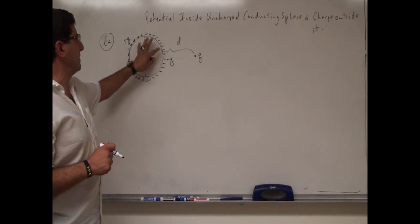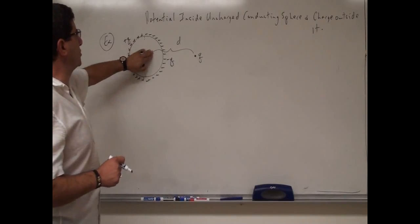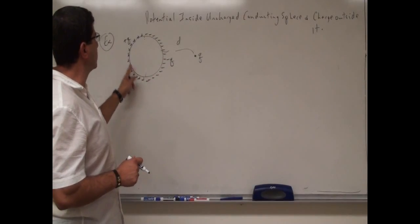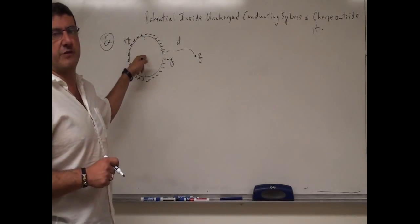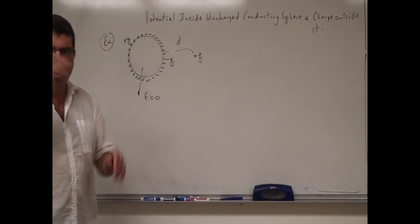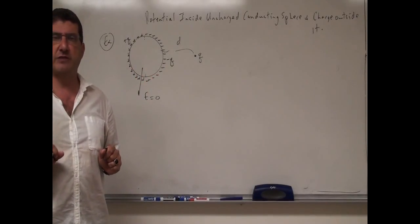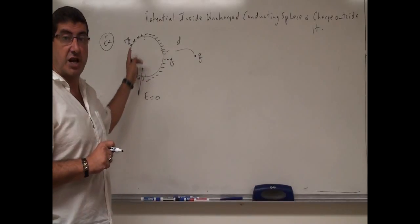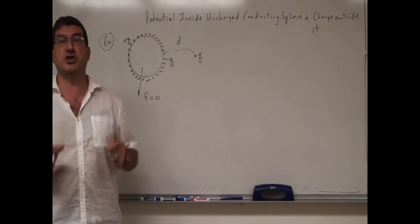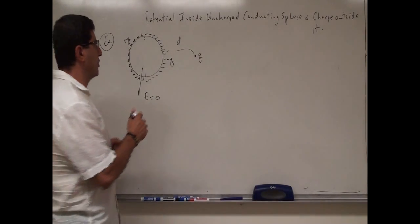So what's going to be the potential anywhere inside of the sphere? We're going to use similar arguments as before. Since this is a conductor, the electric field inside is zero — all the charge rushes to the outside, so anywhere inside the electric field must be zero. Therefore, the surface of the conductor must be an equipotential, and everywhere inside the potential must be constant.